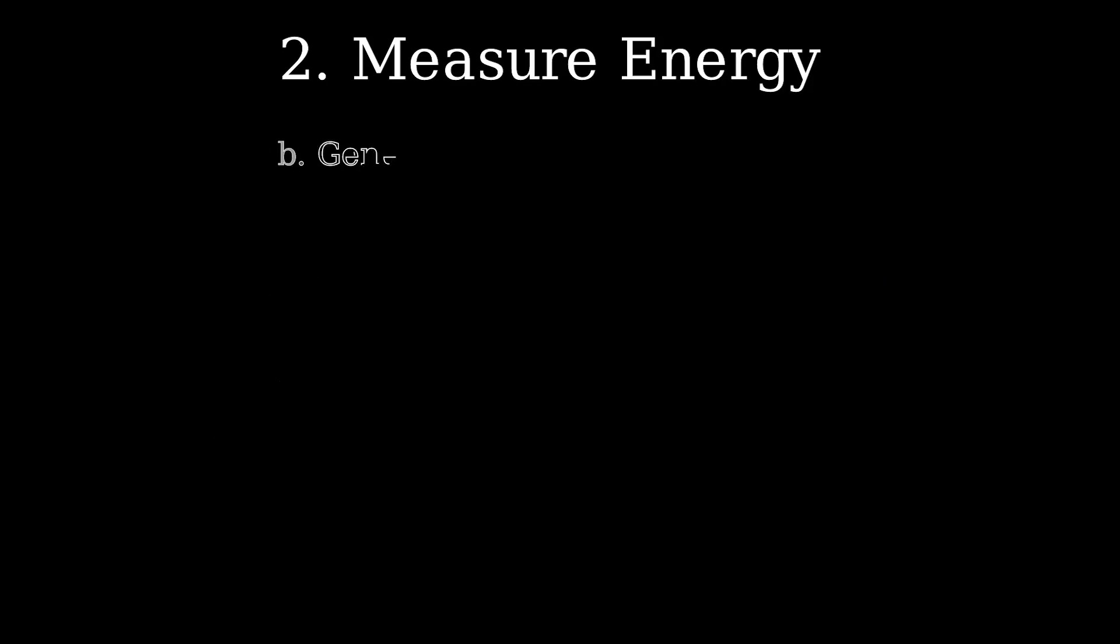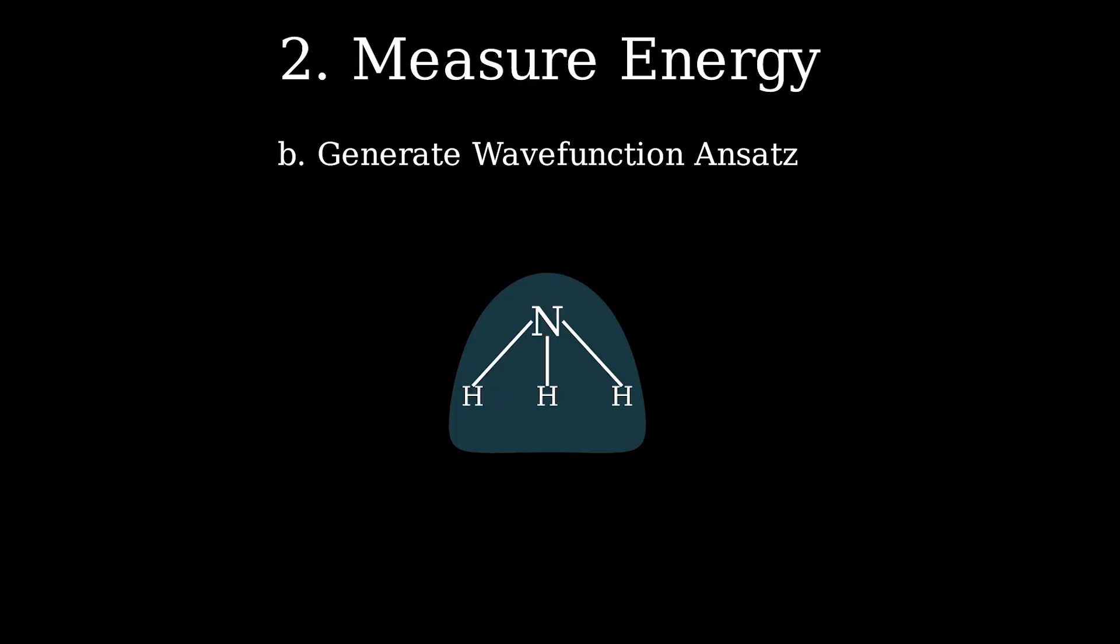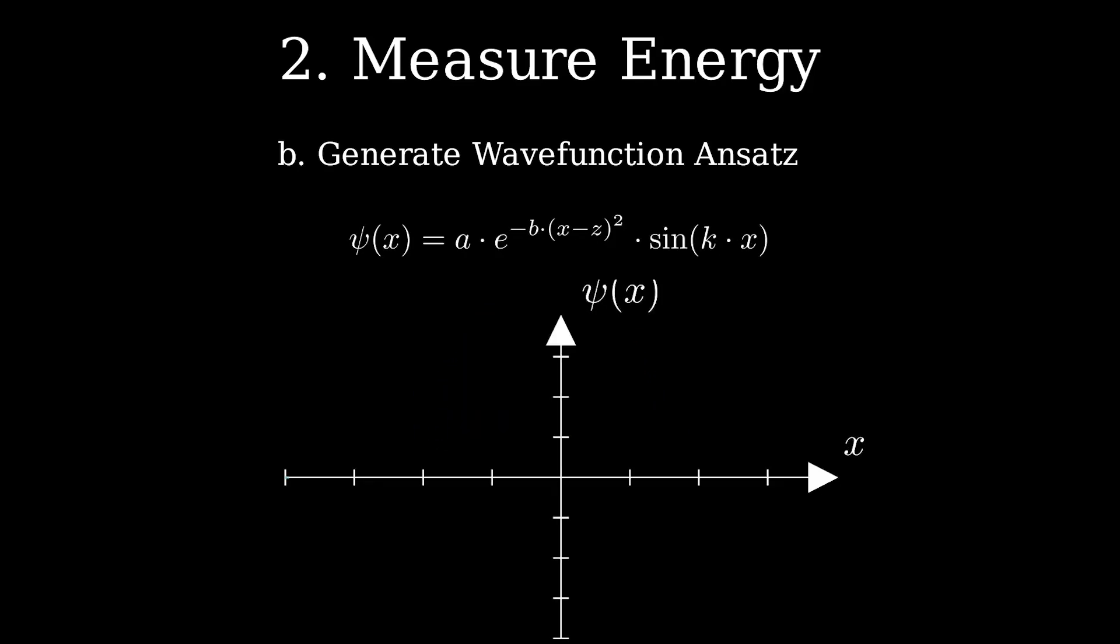Second, we have to generate an ansatz or guess at what the resulting wave function should look like. The wave function is the mathematical function that describes where our electrons in our molecule are most likely to be. To get a final correct wave function, we need to supply the VQE with a guess wave function that has some parameters that we can tune. For example, if our function looks like this, where x is the position, the parameters that we can tune here are the constants a, b, k, and z.